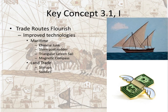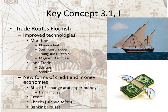On land, you see technological innovation as well in the form of stirrups and saddles, both of which allow people to ride their beasts of burden more easily. In addition to improved technologies, you see new forms of credit and money economy. Bills of exchange and paper money were invented by the Chinese because they ran out of copper coins. This became known as flying money because it moved so quickly and there was so much of it.